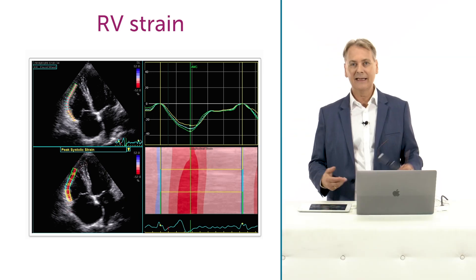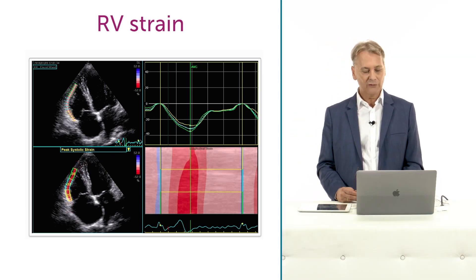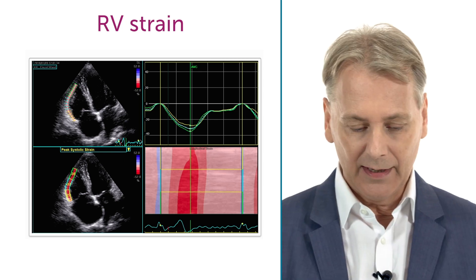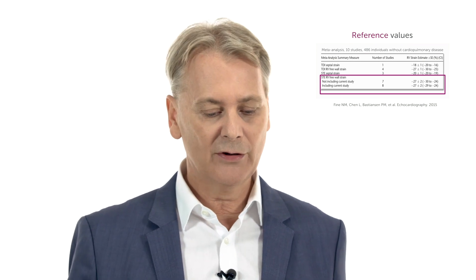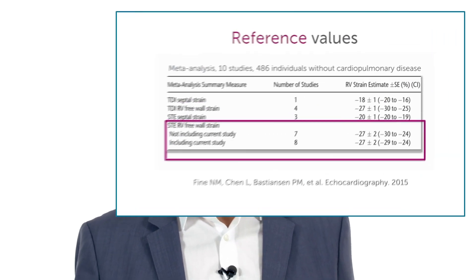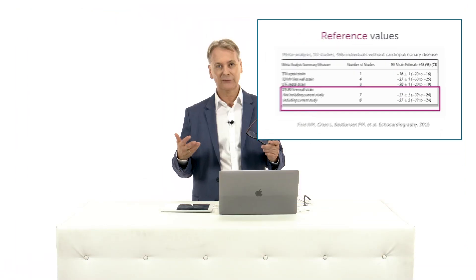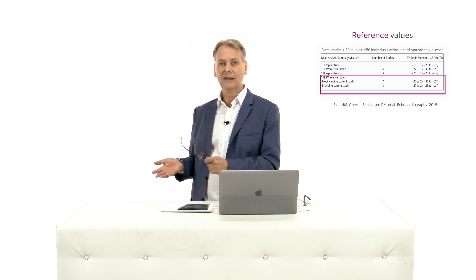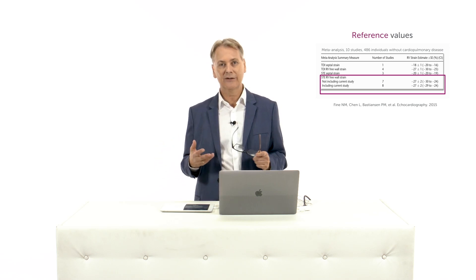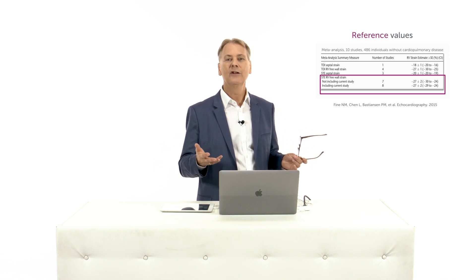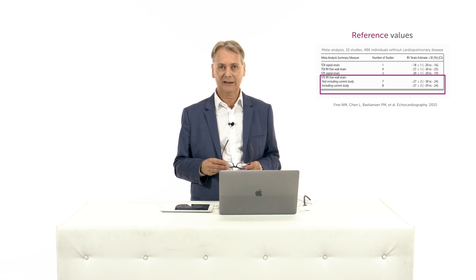We have different ways of displaying these curves and the data. The bottom line is that we now know the normal value is somewhere in the range of minus 27 to minus 28. This is a value which is higher than the global longitudinal strain used for the left ventricle, simply because the right ventricle shows more longitudinal contraction.